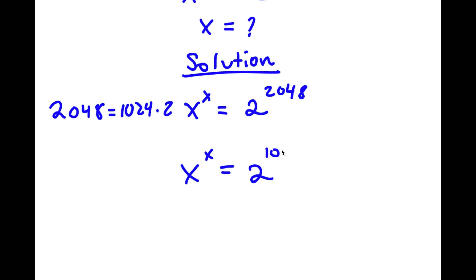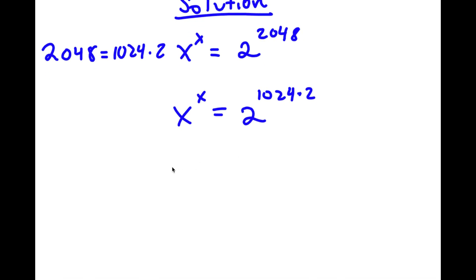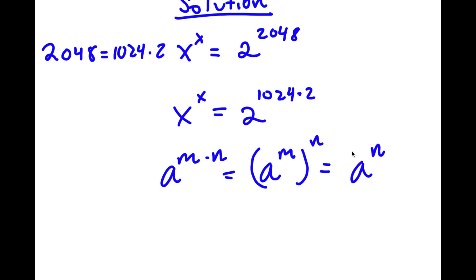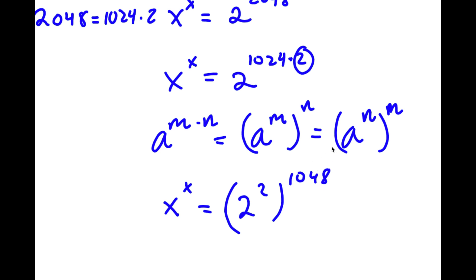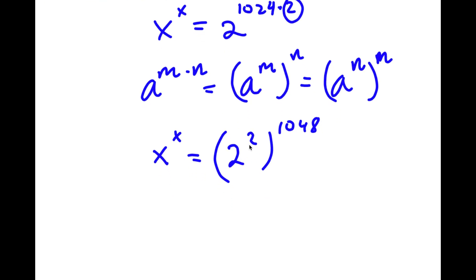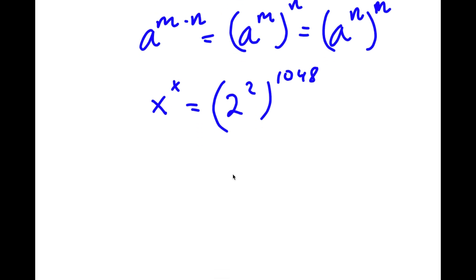I'm going to replace 2048 with 1024 times 2. Using the rule that a to the power of m times n equals a to the power of m to the power of n, I rewrite 2 to the power of 1024 times 2 as 2 to the power of 2, to the power of 1024. Since 2 to the power of 2 is 4, I now have x to the power of x is equal to 4 to the power of 1024.